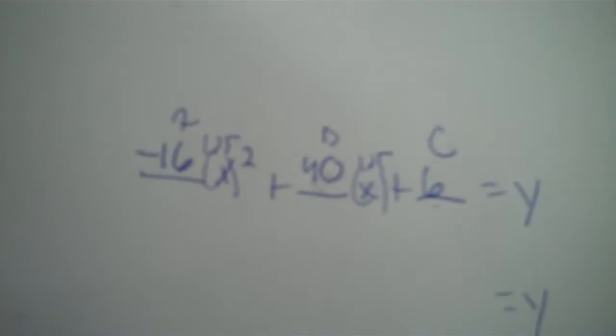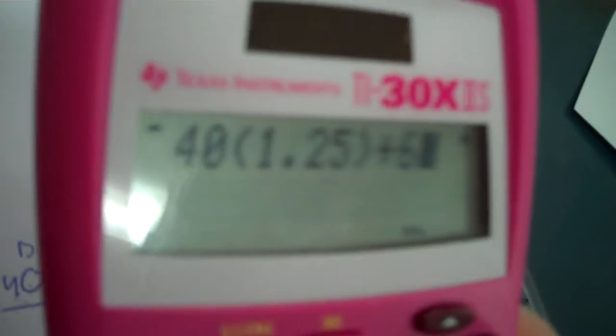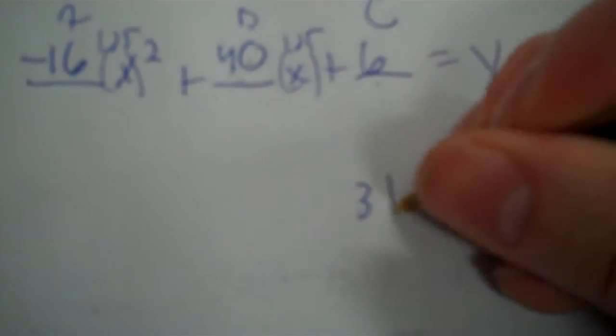Now to find the Y, you simply insert the 1.25 into the equation for X. So: negative 16 times (1.25 squared), plus 40 times 1.25, plus 6 equals 31. So go put that in for Y. X is the time — that's the seconds — and 31 is your feet. 31 feet is the answer.